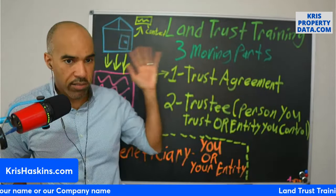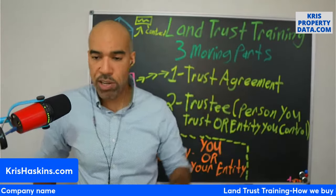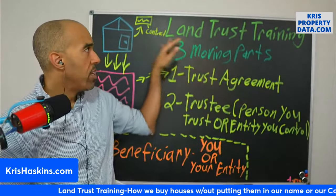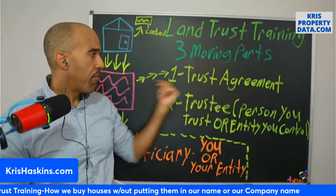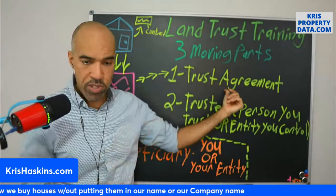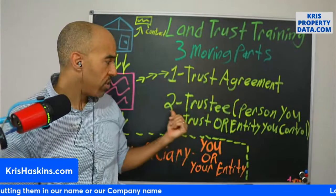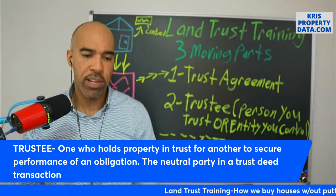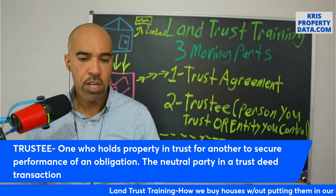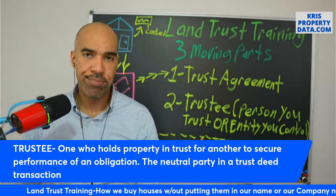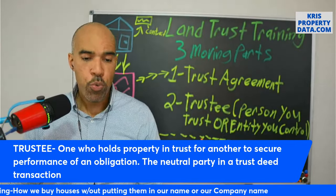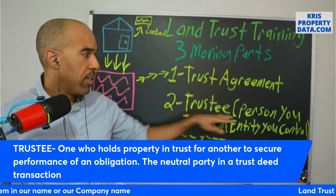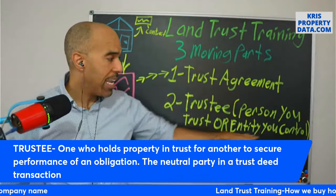There are three moving parts to a land trust. Make sure you download number one — go get your flow chart. The first is your trust agreement. The next moving part is going to be your trustee. Your trustee is one who holds property in trust for another to secure performance of an obligation — that obligation is ownership of the property. Your trustee is going to be a person you trust or an entity you control.